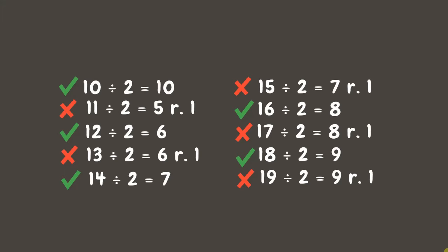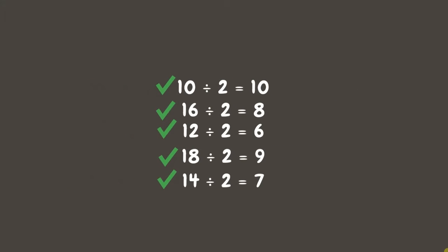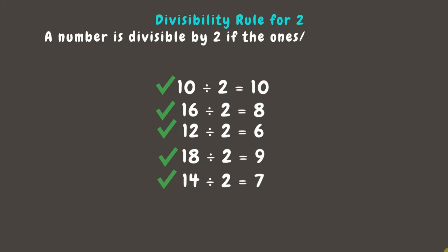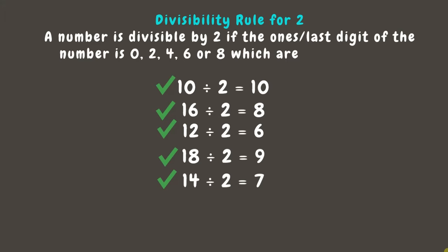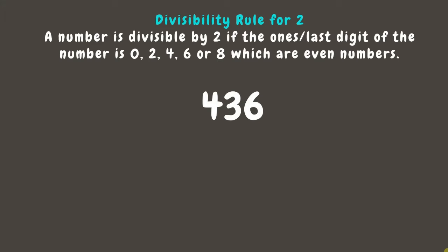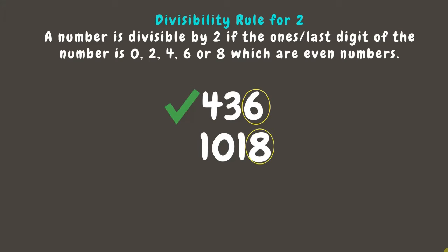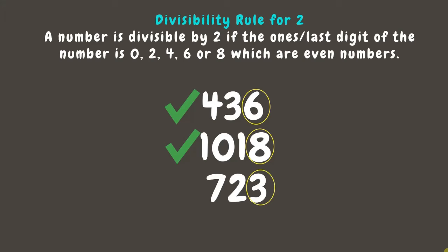Now, let's observe the numbers that are divisible by 2. We can see that a number is divisible by 2 if the ones or last digit of the number is 0, 2, 4, 6, or 8 — that is, if they are even numbers. For example: 436 has last digit 6, so it is divisible by 2. 1018 has last digit 8, so it is divisible by 2. 723 has last digit 3, which is odd, so it is not divisible by 2.